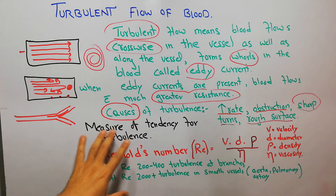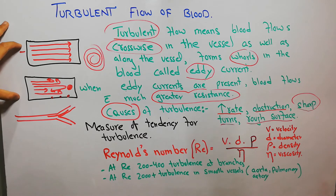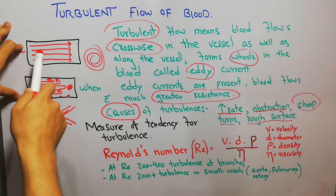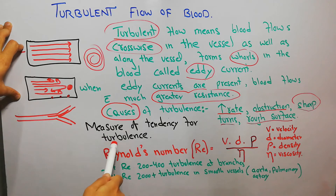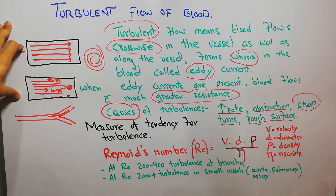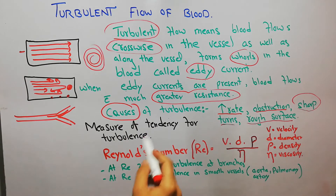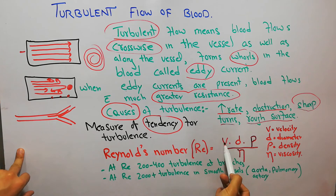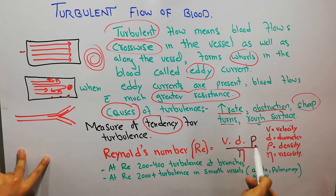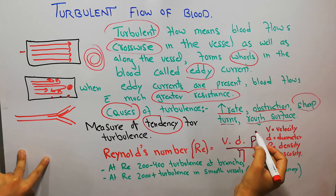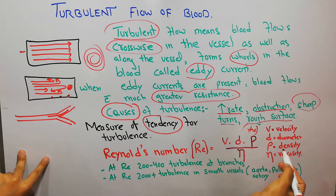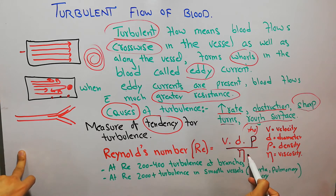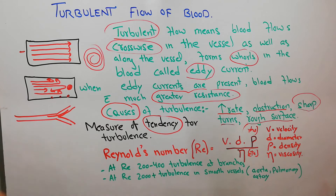Now, how do we measure the tendency for turbulence? If we have two blood vessels, how will we decide which vessel has a higher tendency for turbulence? There is an equation known as the Reynolds number through which we can calculate the tendency for turbulence. The Reynolds number includes: velocity of blood in the vessel, diameter of the vessel, rho (ρ) which represents the density of the blood, and eta (η) which represents the viscosity of the blood.